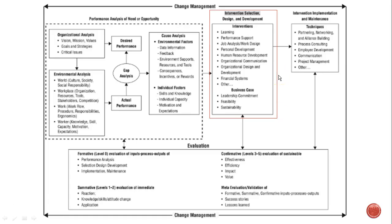It's important to understand that intervention selection is a very important part of the performance improvement phase, which also includes intervention design, intervention development, and producing a business case. The HPT model illustrates where the intervention selection is positioned in the performance improvement process, as you can see on the screen. Last week we completed the cause analysis, where you were able to discover some of the why behind the gaps, which was the bridge to selecting the interventions.